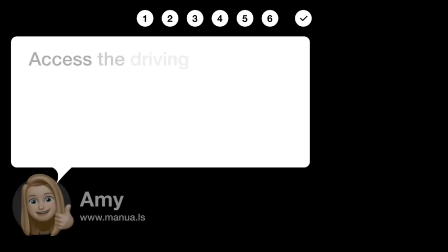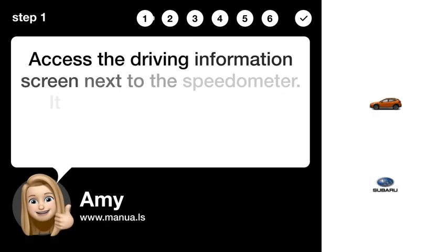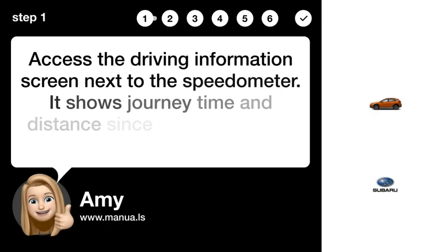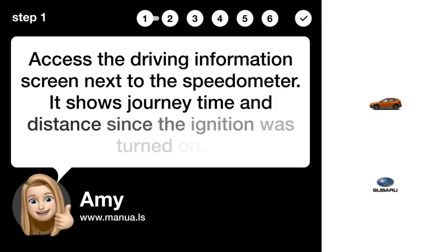Step 1: Access Info Screen. Access the Driving Information Screen next to the speedometer. It shows journey time and distance since the ignition was turned on.